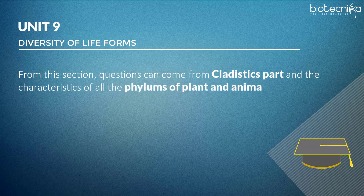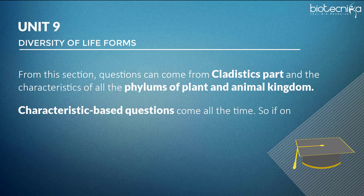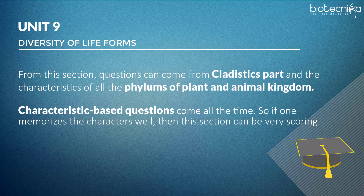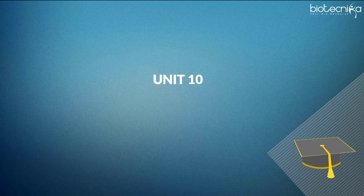Unit 9 — Diversity of Life Forms: Questions can come from the cladistics part and the characteristics of all the phyla of plant and animal kingdoms. Characteristic-based questions come all the time, so if one memorizes the characters well, this section can be very scoring.